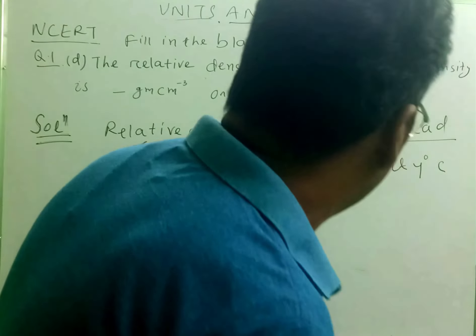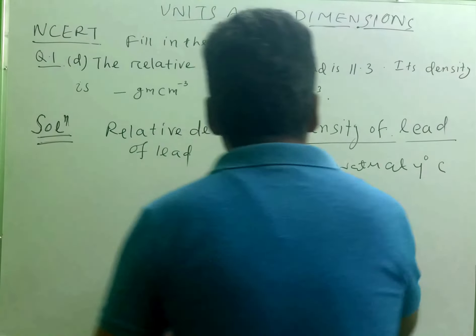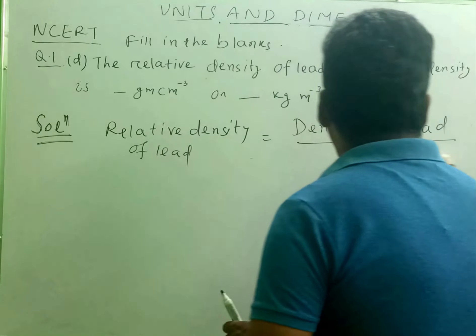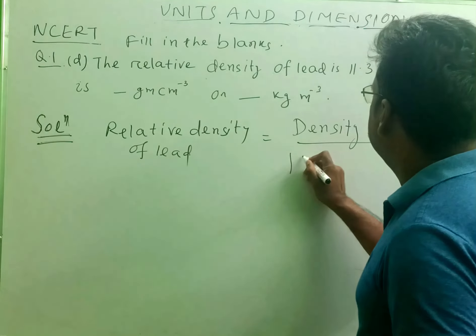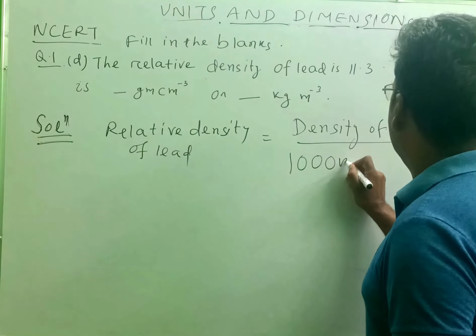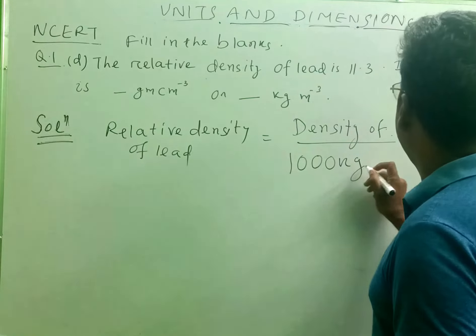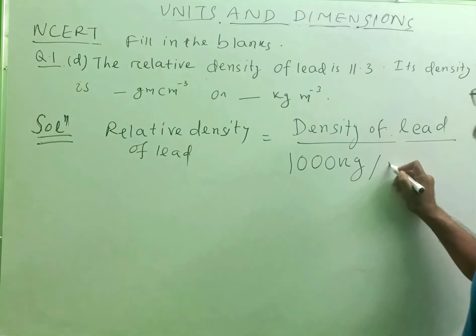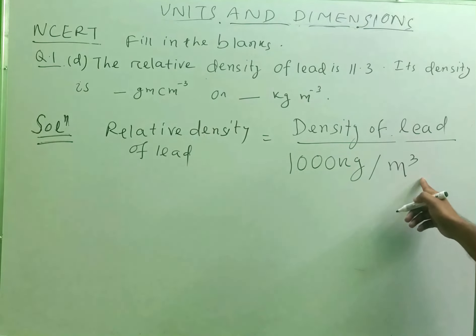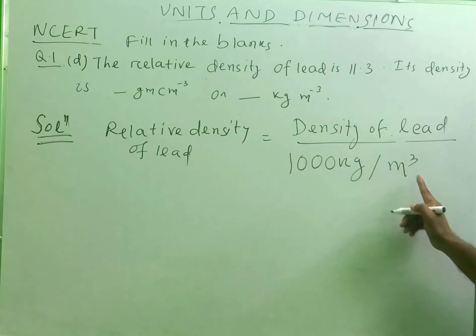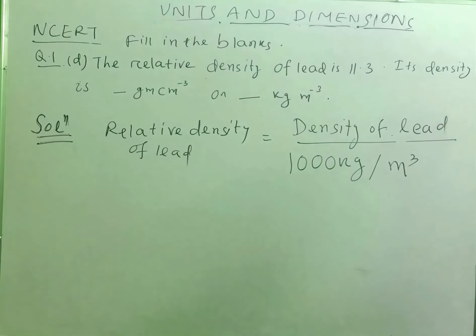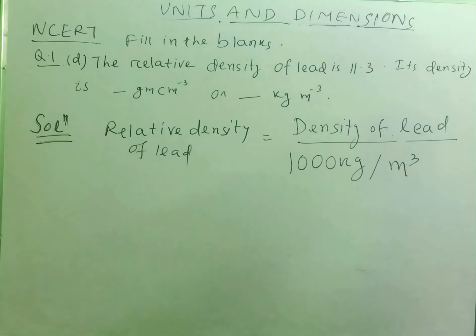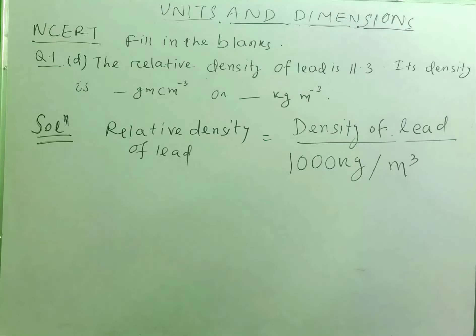What is the density of water at 4 degrees centigrade? It is 1000 kg per meter cube. In one cubic meter, we will find 1000 kg of water at 4 degrees Celsius.